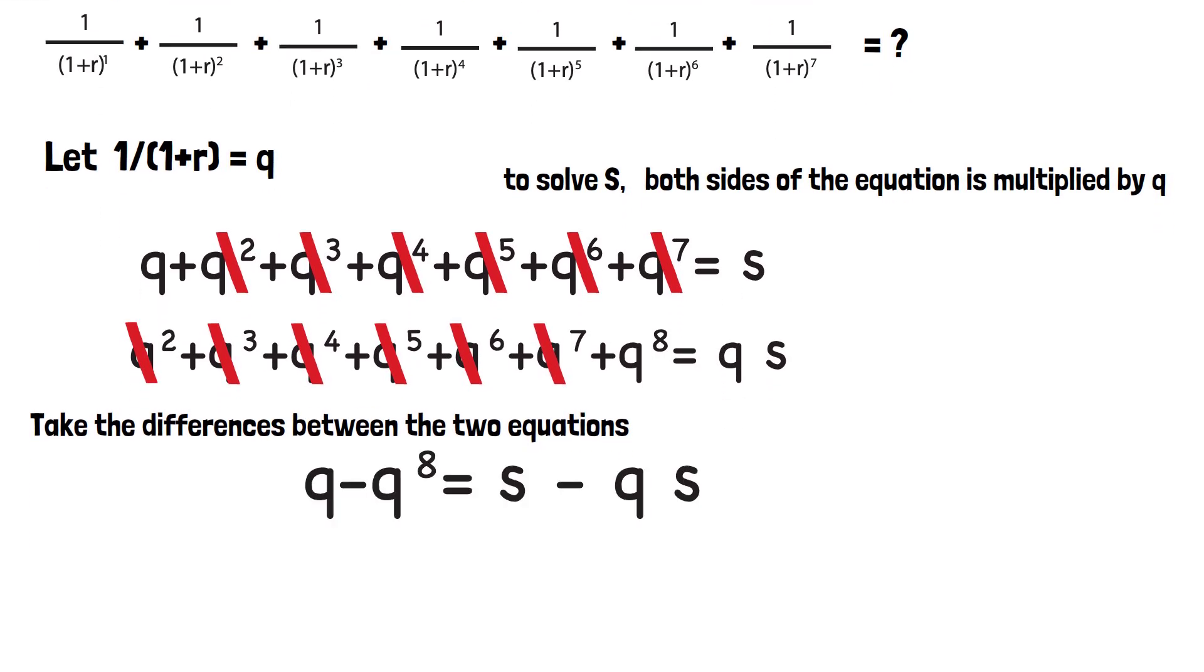So at the end of the day, what's left on the left side is q minus q to the power 8. So now we can solve S equals q minus q to the power 8 divided by 1 minus q. So now let's change back in the form of R. We get this equation.